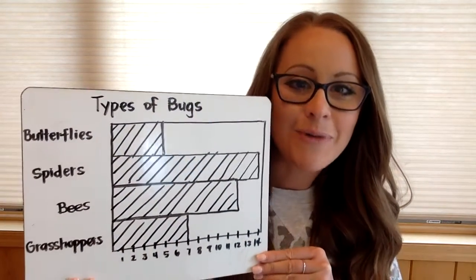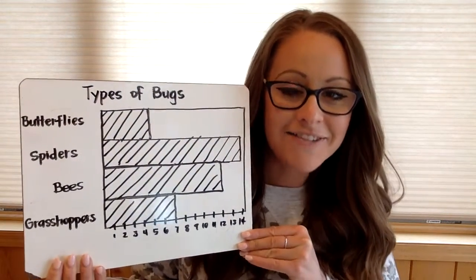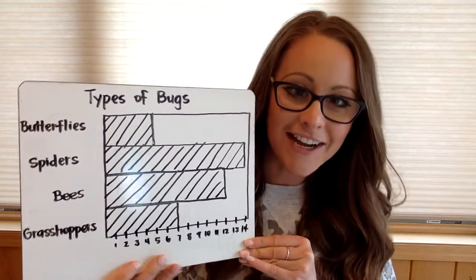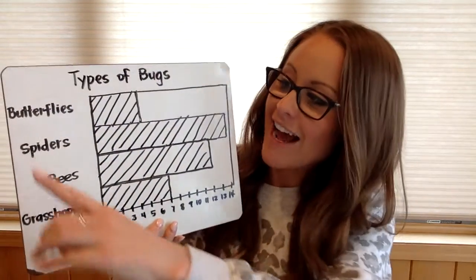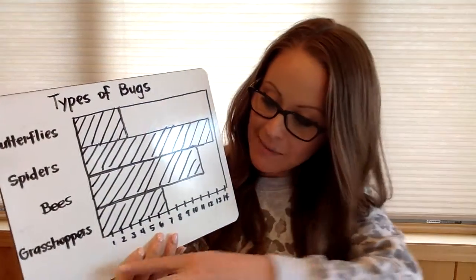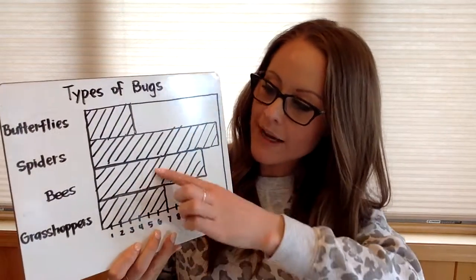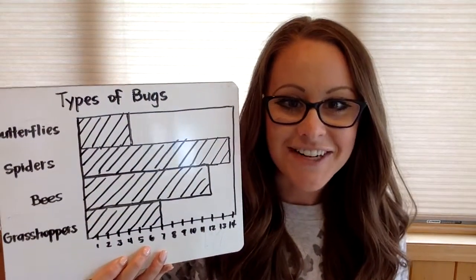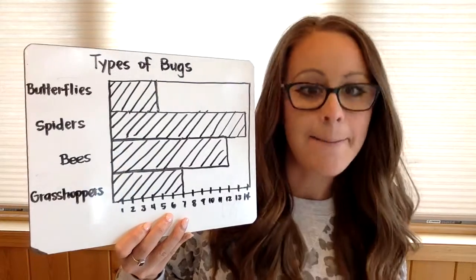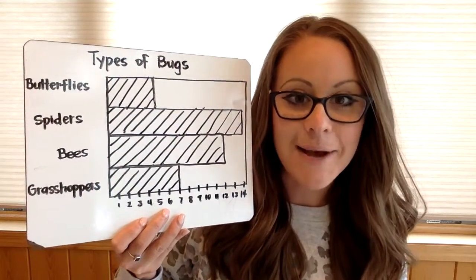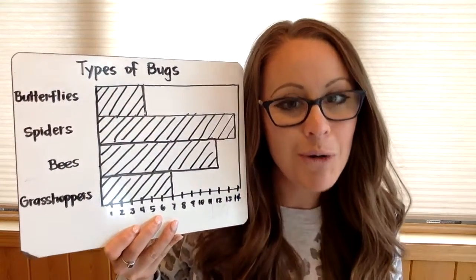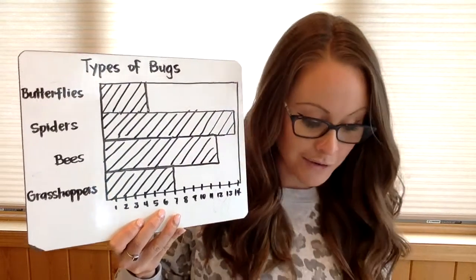Here is what my finished bar graph looks like. I have the title 'Types of Bugs' and I have butterflies, spiders, bees, and grasshoppers. I added in my numbers and drew the different amounts: butterflies has 5, spiders has 14, bees have 12, and grasshoppers have 7. Now we're going to answer some questions about it.